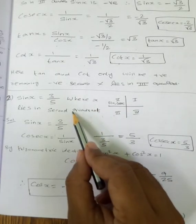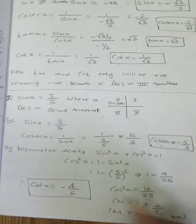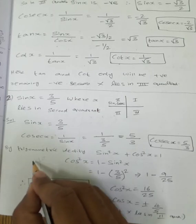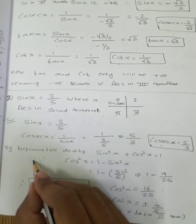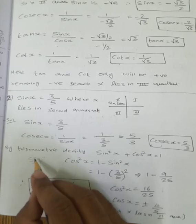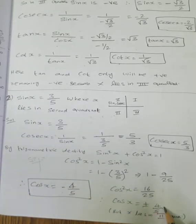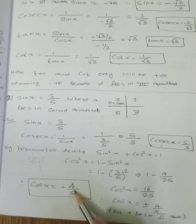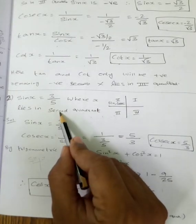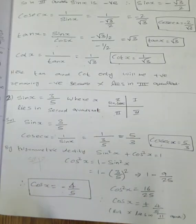But x lies in the second quadrant. In the second quadrant, sin and cosecant are positive, remaining is negative. So cos x value is negative. Therefore cos x equals minus 4 by 5.